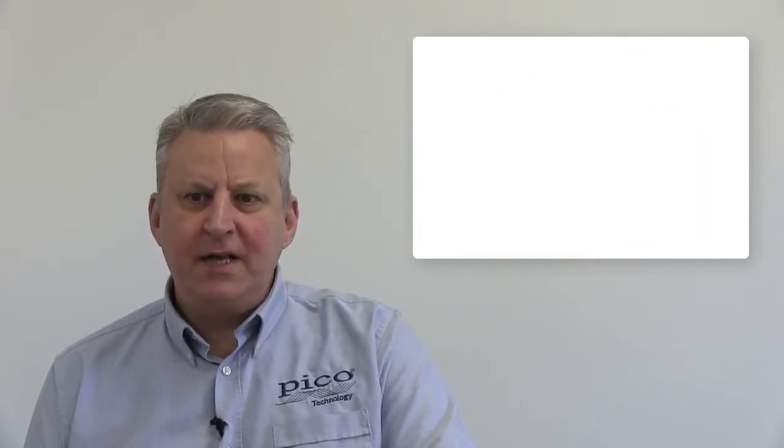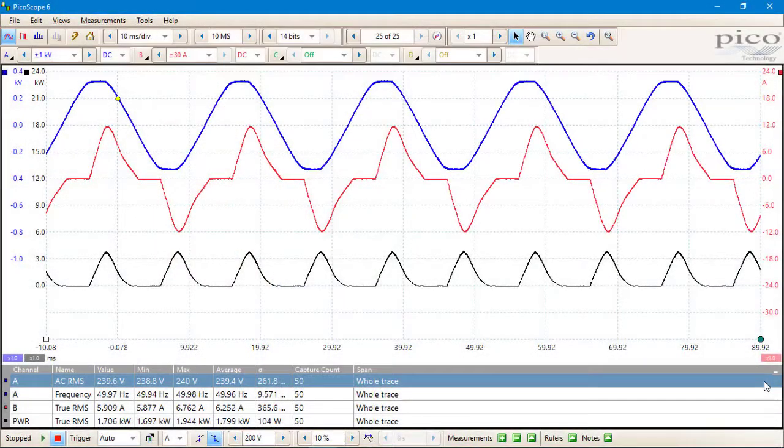There are also two new ACDC current probes, the TA300 and the TA301 which utilise the D9 connectors and are powered directly by the scope which also recognises the probe type, adjusts the scaling and changes the units to amps.